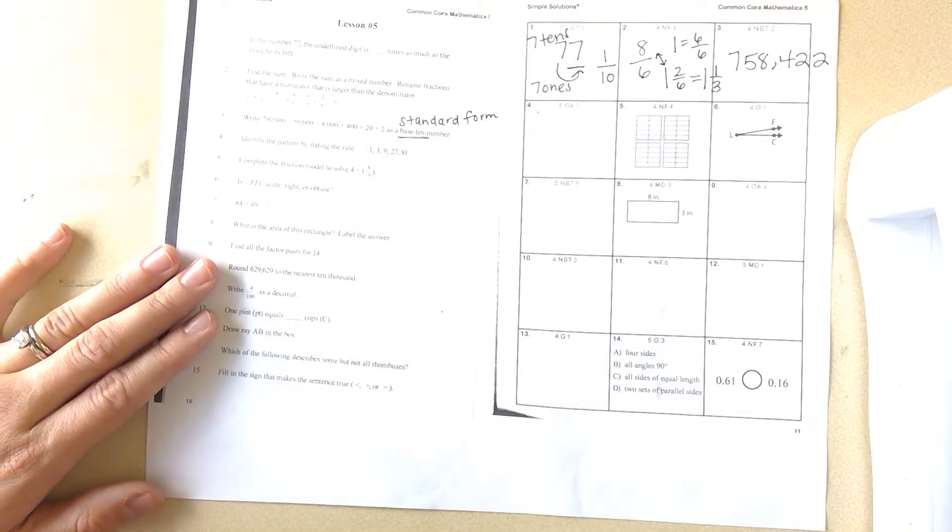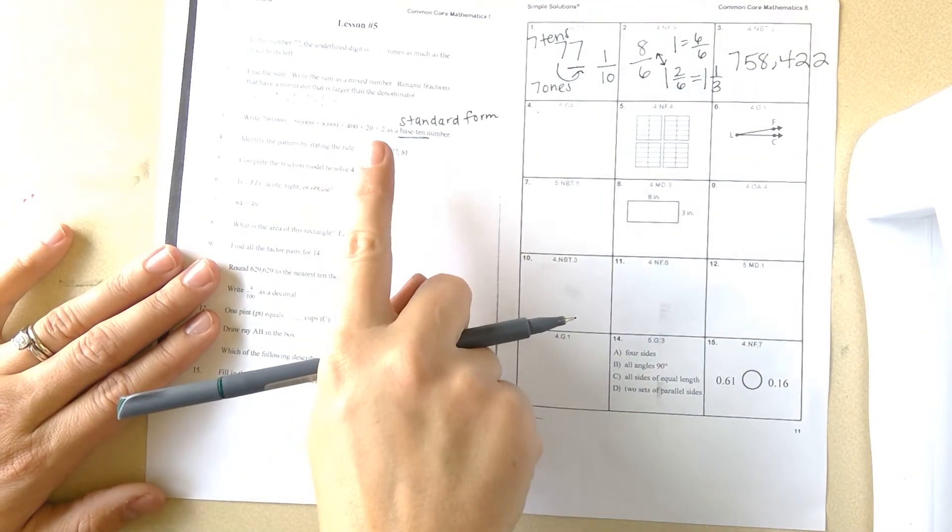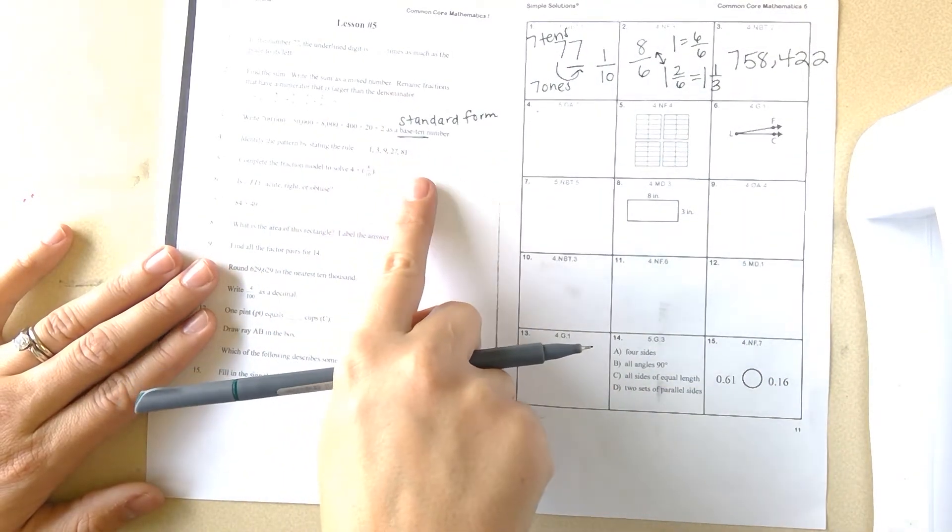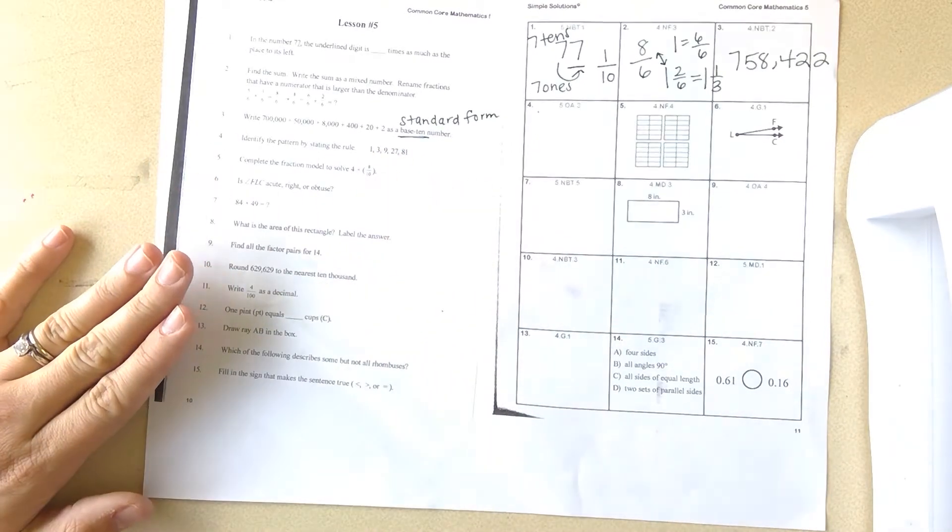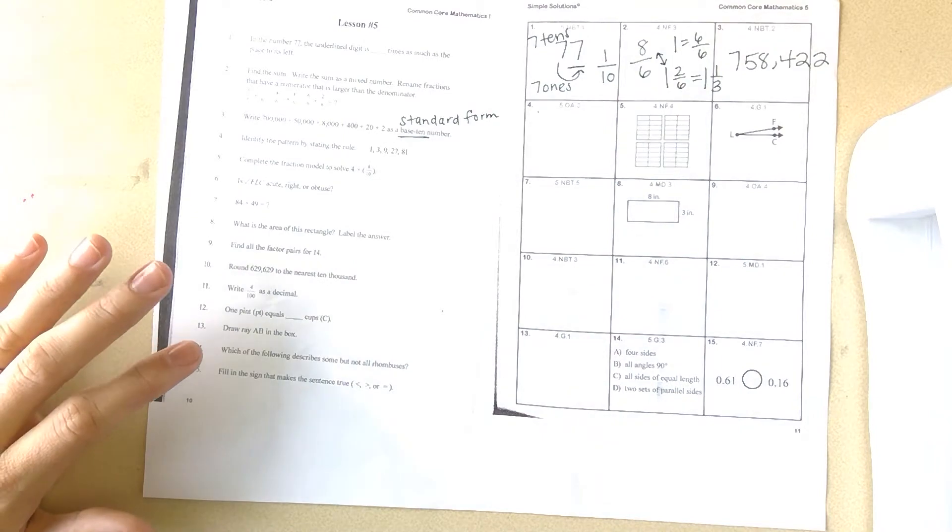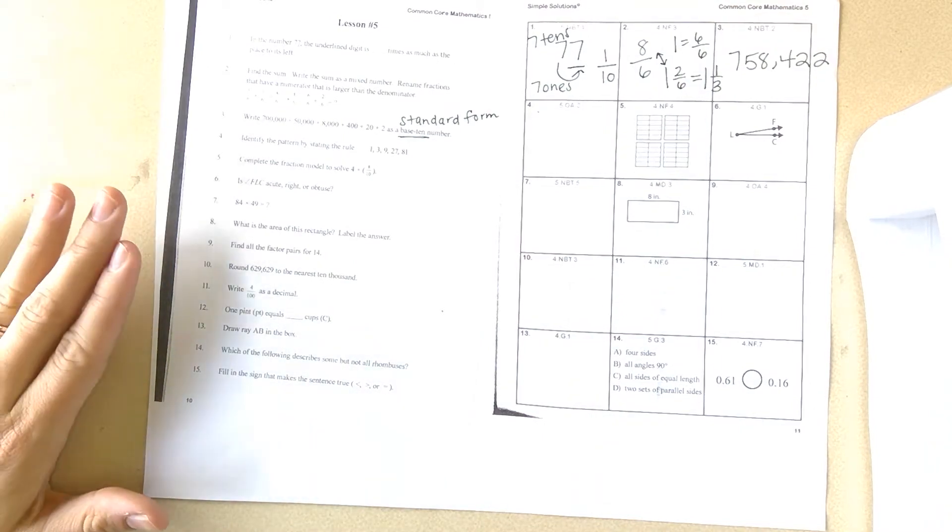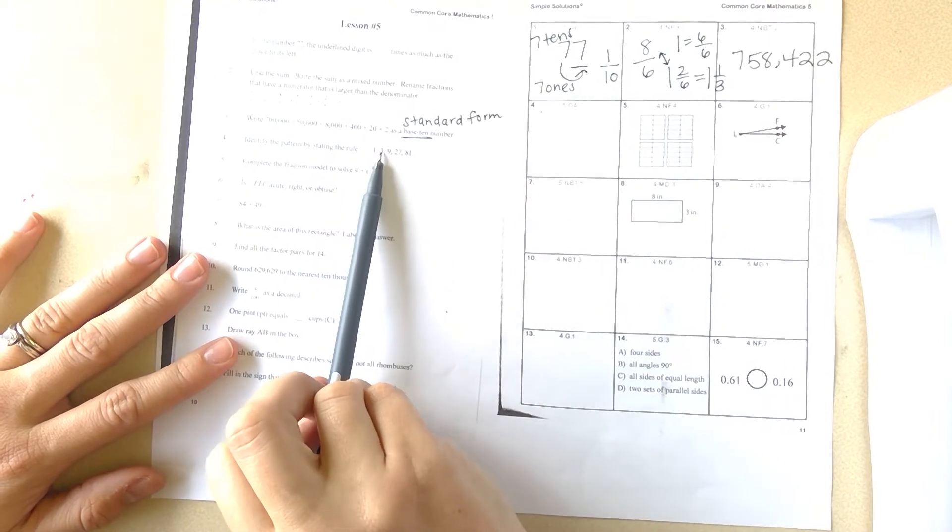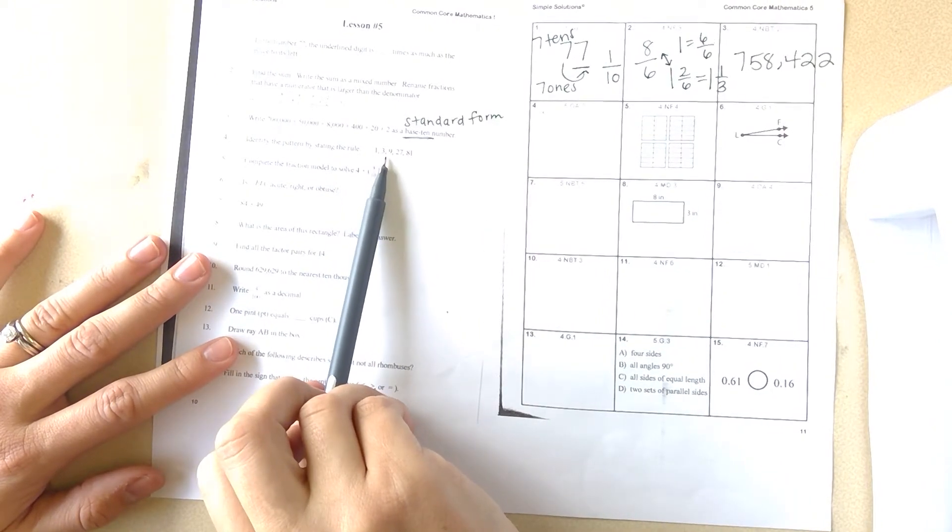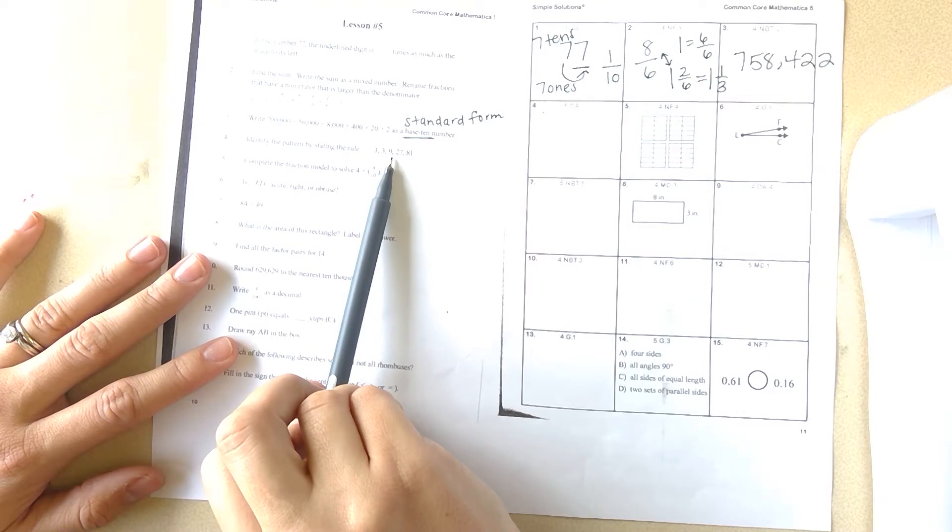Number four: identify the pattern by stating the rule. You went from 1 to 3, 9, 27, 81. Once you look at that, you can notice the numbers are getting larger, so you're either adding or multiplying. I can add 2 to 1 to get to 3, but if I add 2 to 3, would that get me to 9? No, it wouldn't.